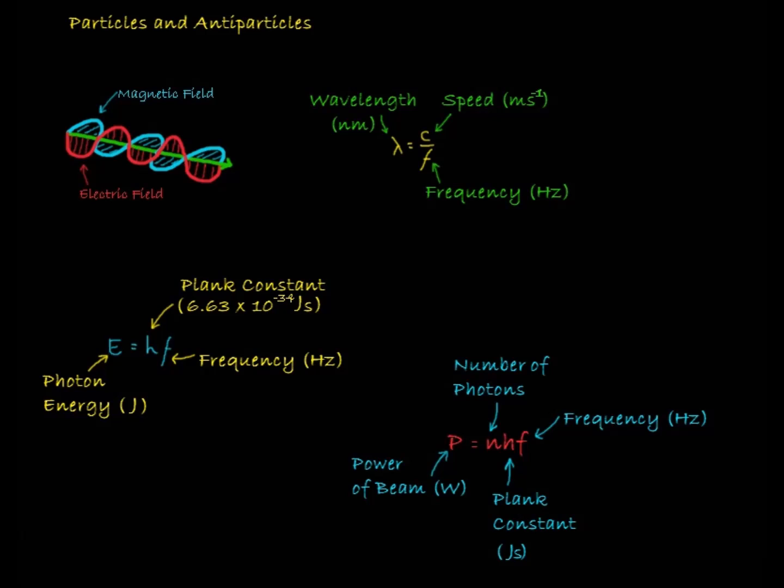Paul Dirac was writing down the equations obeyed by electrons and found a mirror image solution. This predicted the existence of a particle like an electron but with the opposite electric charge, the positron. It was later discovered in a cosmic ray experiment. Positrons are the same mass and energy as electrons but carry a positive charge. This was the discovery of antimatter.